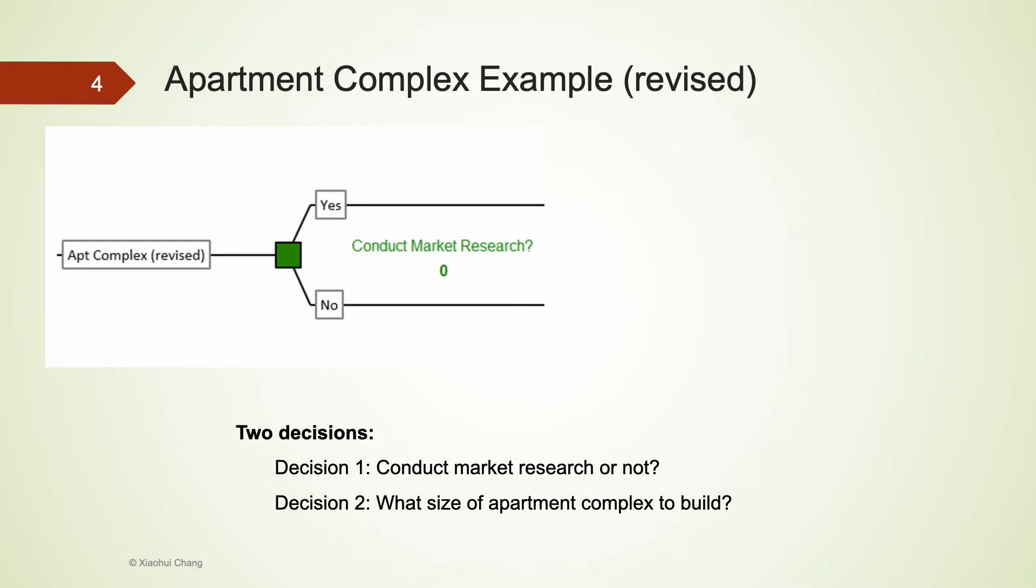Let's start building this tree using PrecisionTree. When we build a tree in PrecisionTree, we start from the left to the right. The first decision would be whether they should carry out market research. This is a decision node, so we draw a square here. There are two alternatives: yes versus no. So there are two branches coming out of this node.